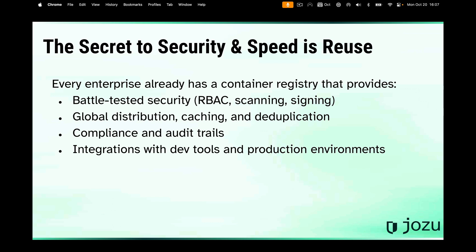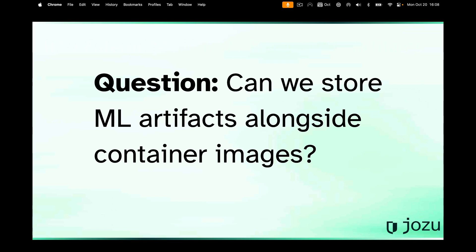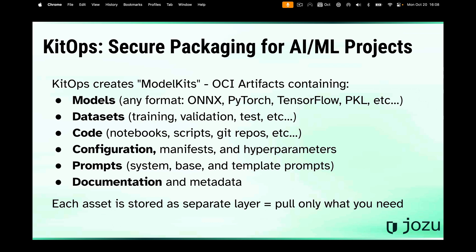One of the things I learned from my time at large organizations like Red Hat and even more so AWS is that the secret to security and speed really is reuse — you don't want more components than you need. The reality is that every enterprise already has a container registry. It's battle-tested. It's got RBAC, scanning, signing, global distribution, caching, deduping, compliance, and audit trails, plus integration with dev tools and production environments. So in a lot of ways, it's the ideal hub of this wheel. The question is: can we store ML artifacts alongside container images in a useful way? So we created KitOps, which is basically secure packaging for AI/ML projects that lives on the OCI artifact standard.